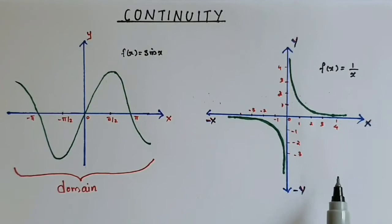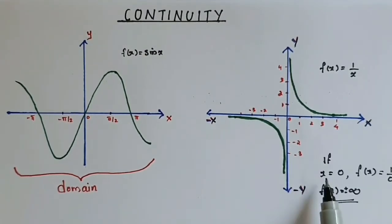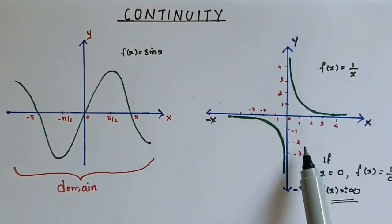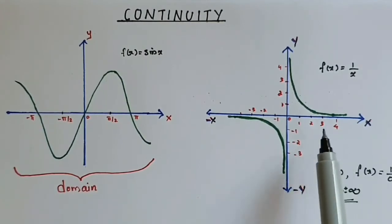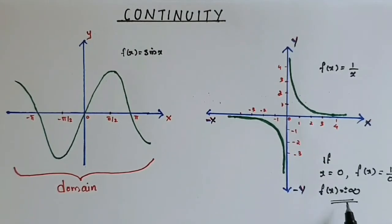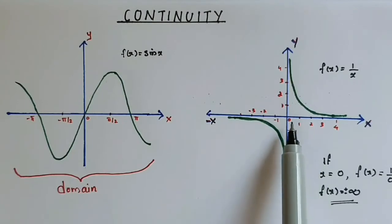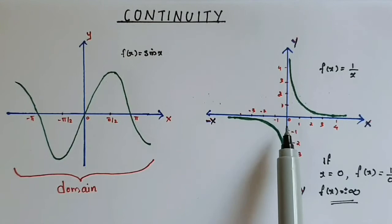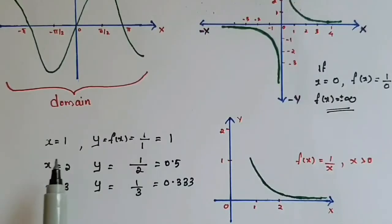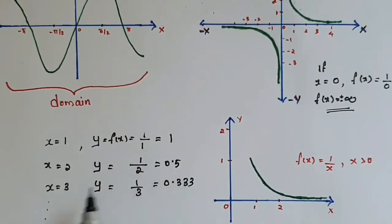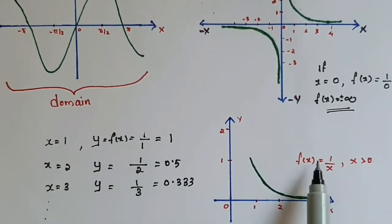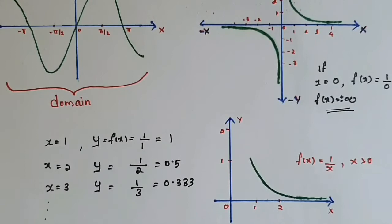This second graph is not continuous — it is a discontinuous function. If we put x equal to 0, the function goes to infinity, which is undefined. Our first condition requires f of a to be a finite value, but here it is infinite. So the function is discontinuous at x equal to 0. However, if we change the domain to x greater than 0, excluding 0, then for x equal to 1, y equals 1; x equal to 2, y equals 0.5; and so on. Hence, f of x equal to 1 by x is continuous for all values of x except at x equal to 0.